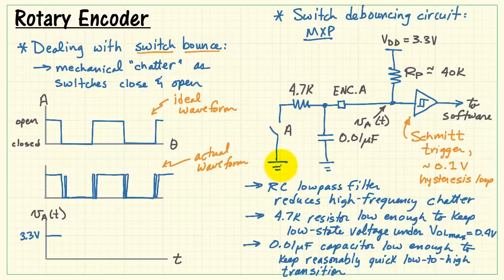and the rate is dictated by this RC constant of the 4.7K and the 0.1 microfarads. And this is a relatively short time constant with the value of 4.7K.